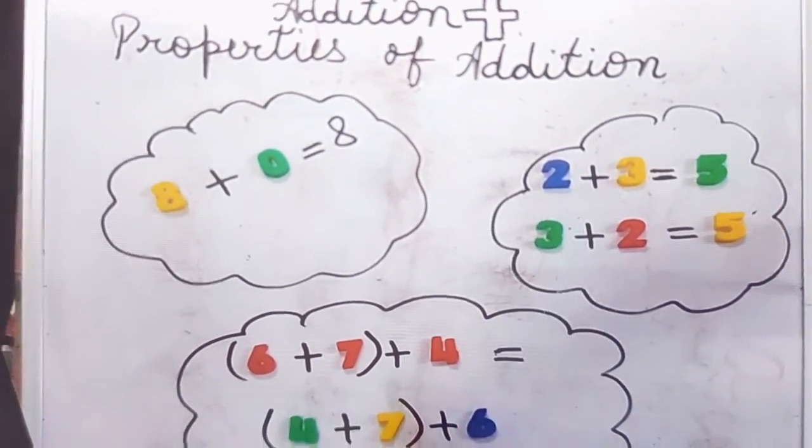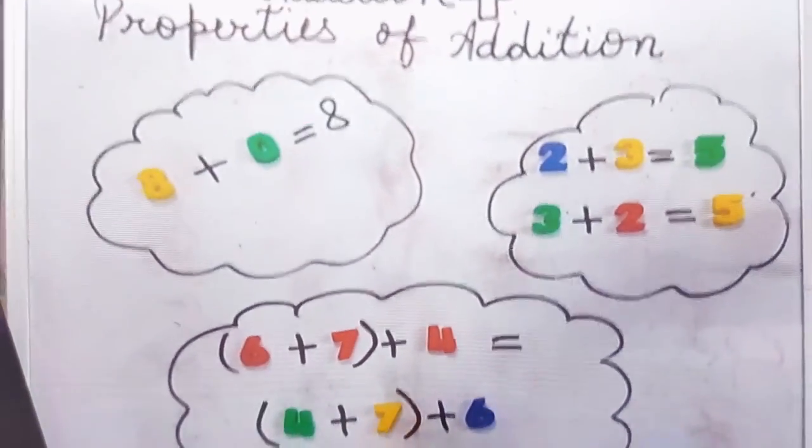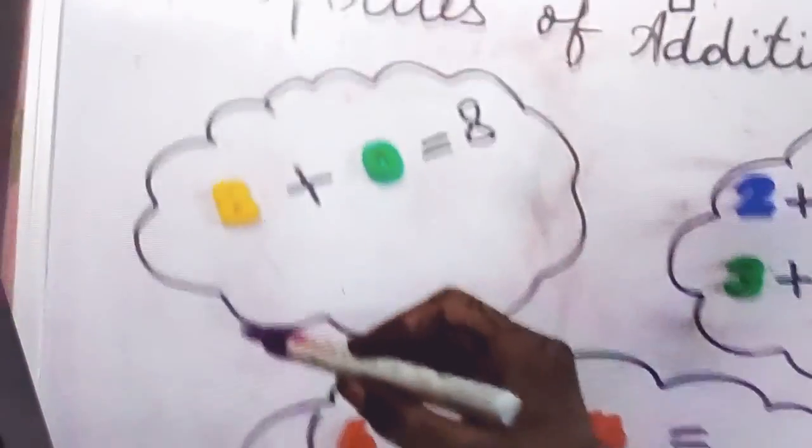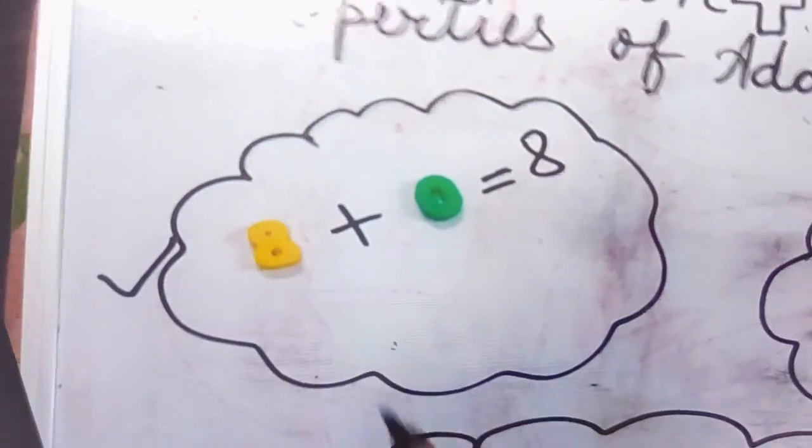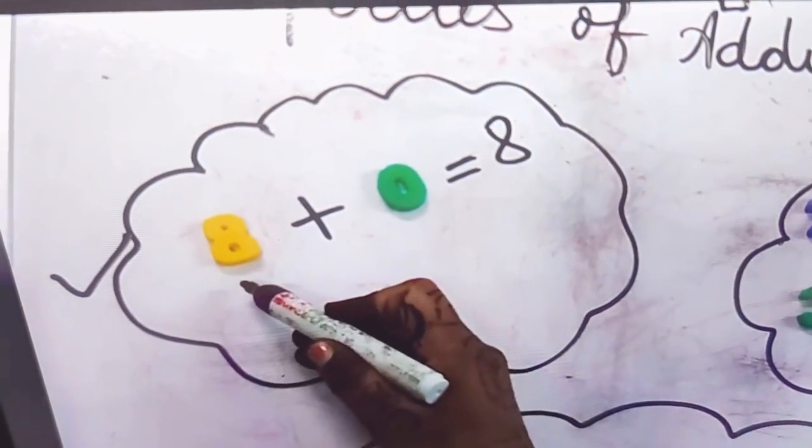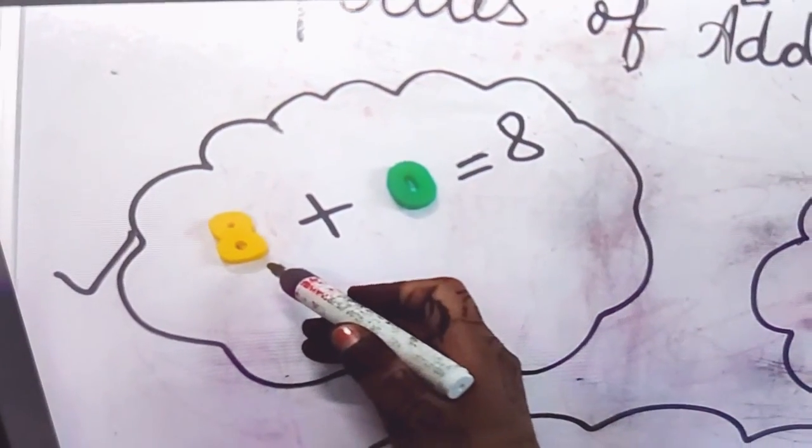So, properties of addition, let me tell you. The first property: if we add 0 to any number, then its identity will never change.